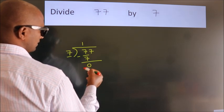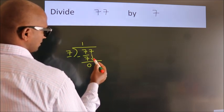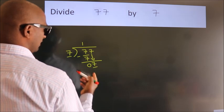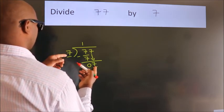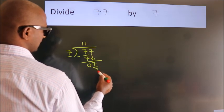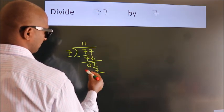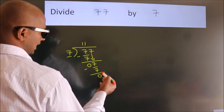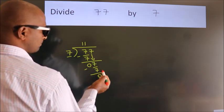After this, bring down the beside number — so 7 comes down, giving us 7. When do we get 7? In the 7 times table — 7 once is 7. Now we subtract. We get 0. After this, there are no more numbers to bring down.